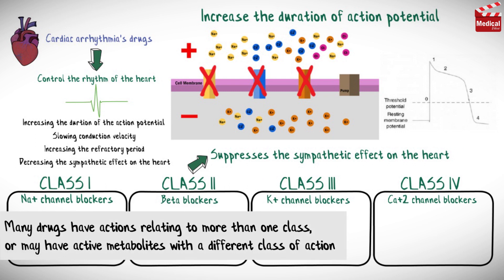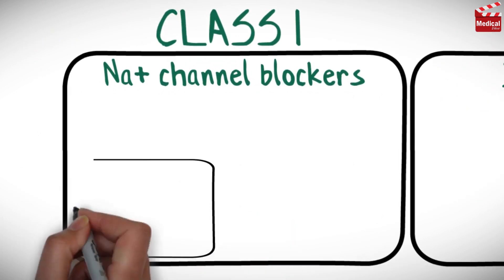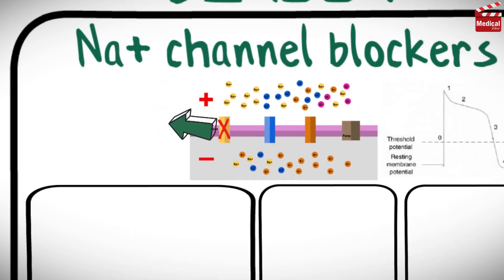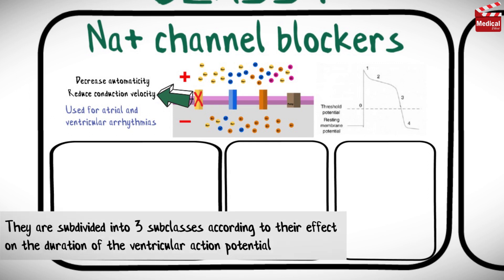Many drugs have actions relating to more than one class, or may have active metabolites with a different class of action. Class 1 drugs block voltage-gated sodium channels; they decrease automaticity and reduce conduction velocity. They are used for atrial and ventricular arrhythmias, and are subdivided into three subclasses according to their effects on the duration of the ventricular action potential: Class 1a, 1b, and 1c.